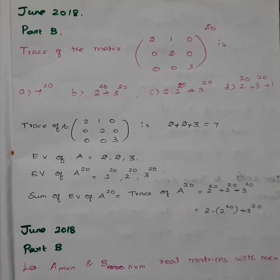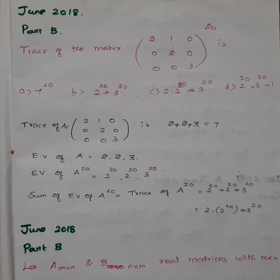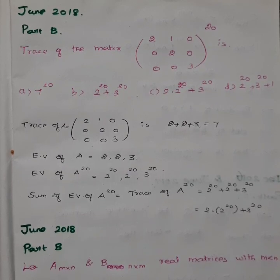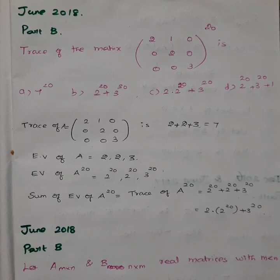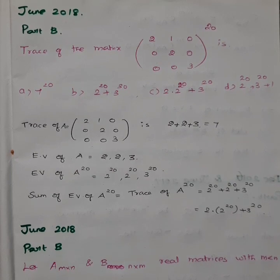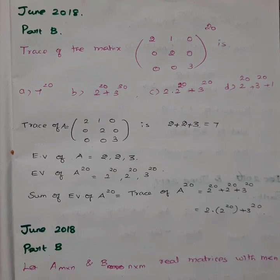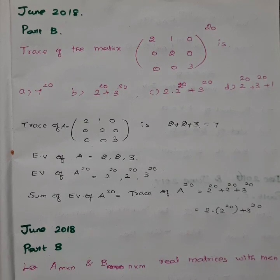We are going to talk about eigenvalue and trace. We will discuss this problem — sometimes we talk about the eigenvalue of A to the power 20. Let's talk about the matrix. If you have a matrix A, the trace is 2 plus 2 plus 3, which equals 7.